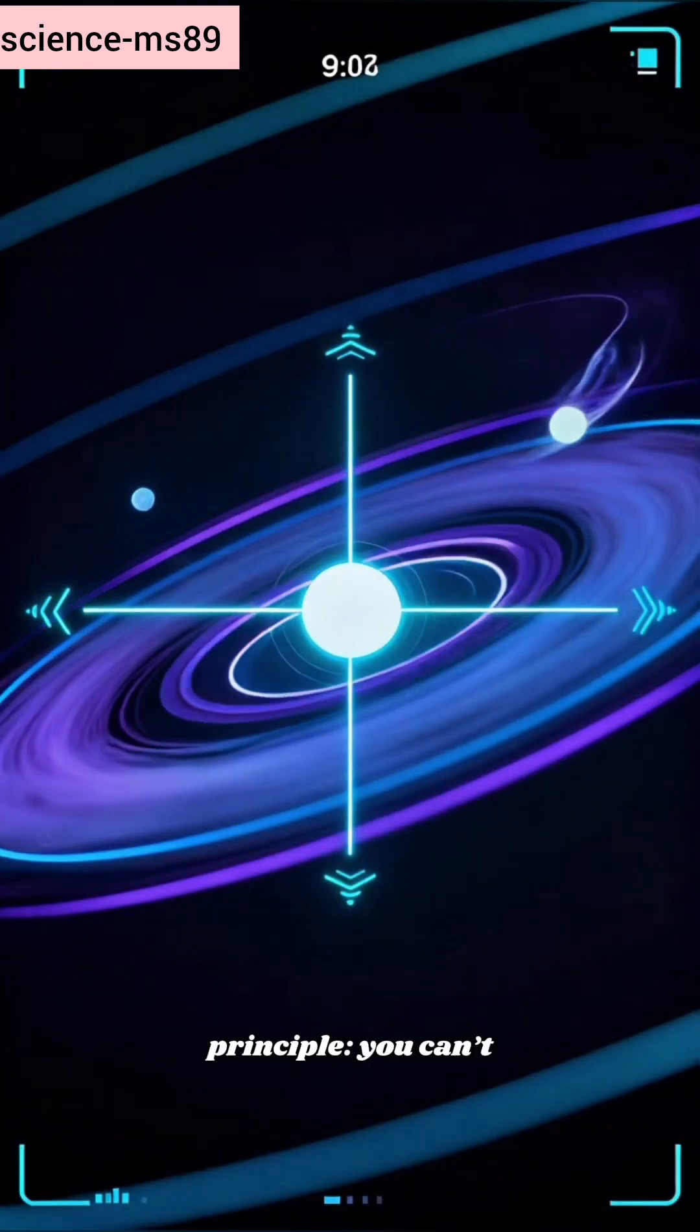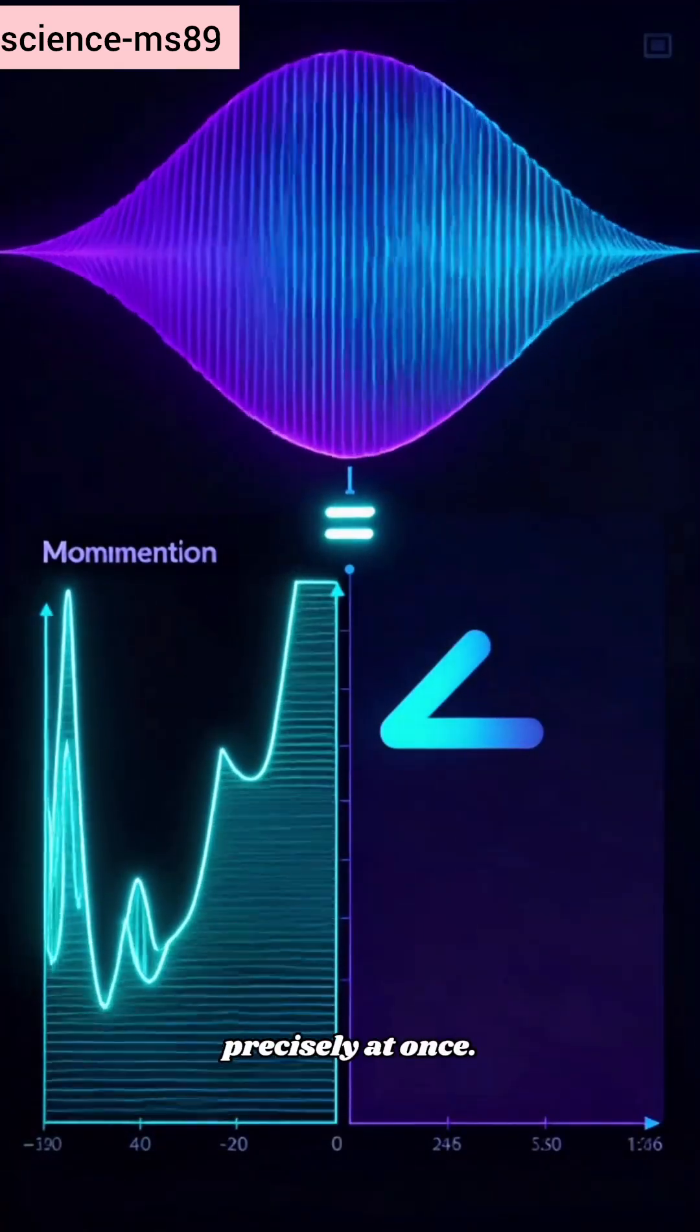Heisenberg's uncertainty principle. You can't nail both position and momentum precisely at once.